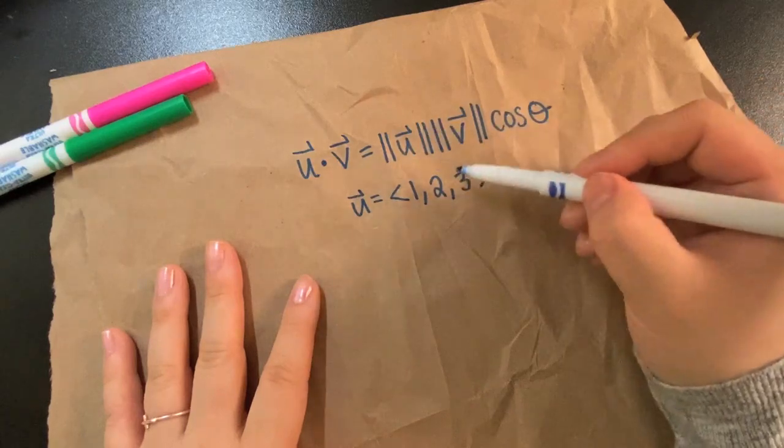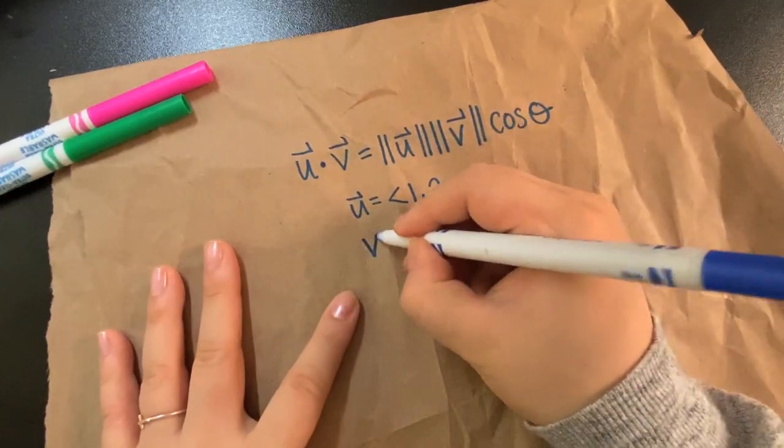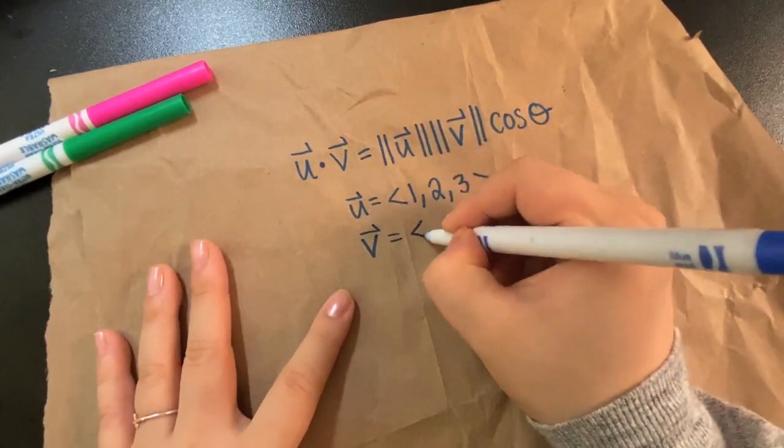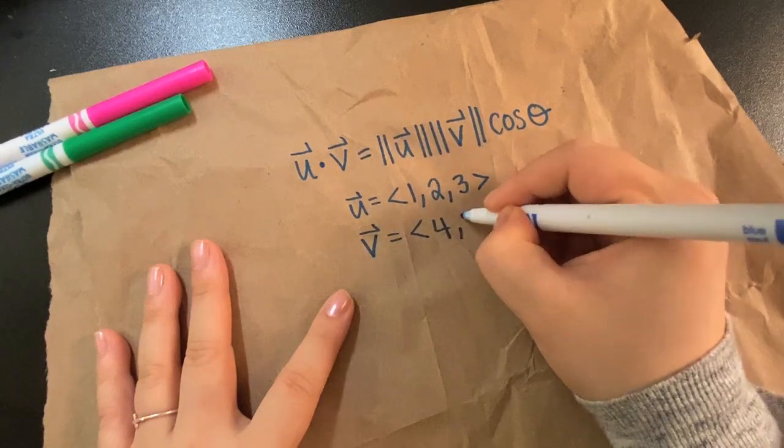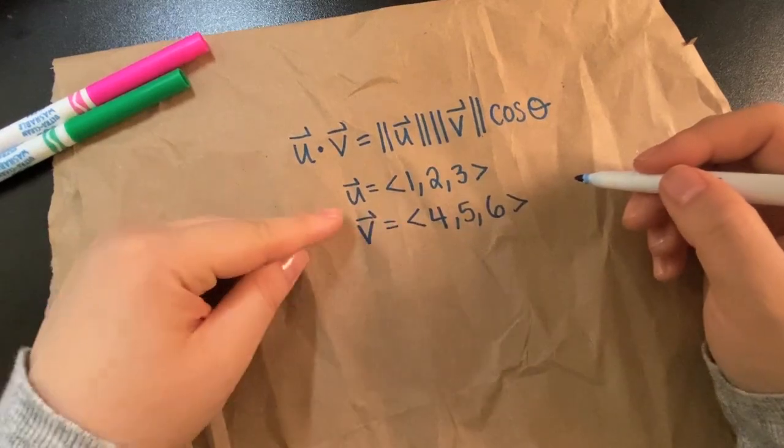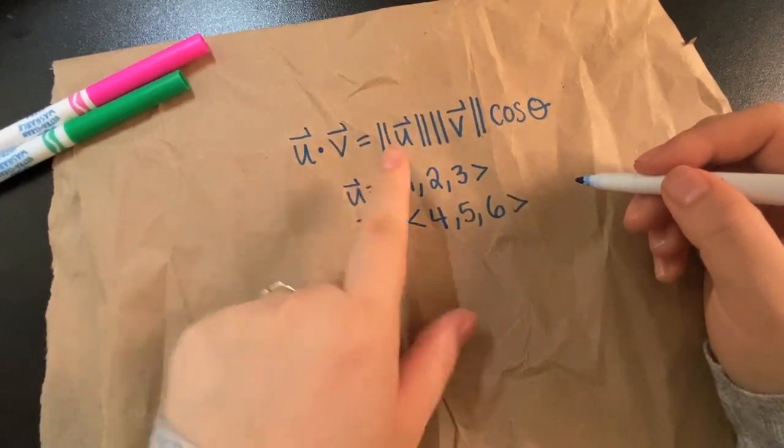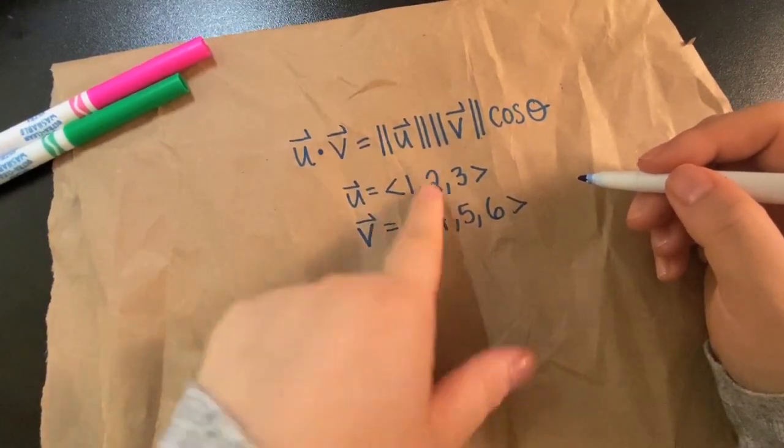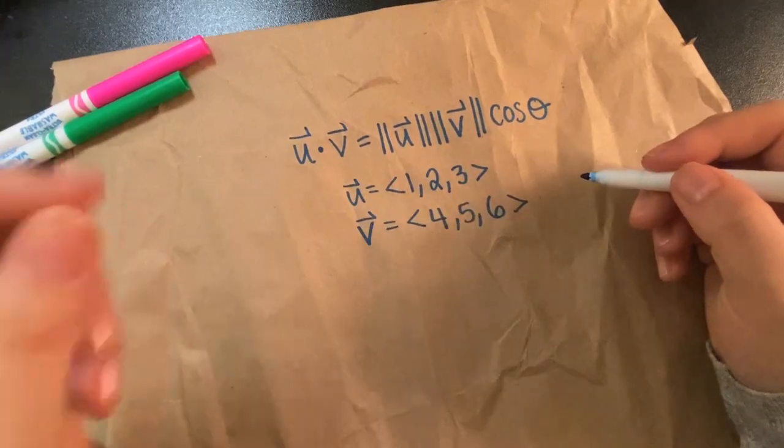So U dot V, there's a method to finding that, and we're just going to need the coordinates. So you might look something like this. We'll just keep it basic, like one, two, three, and V can be four, five, six, why not? So these are three-dimensional vectors. One coordinate, a second coordinate, a third coordinate.